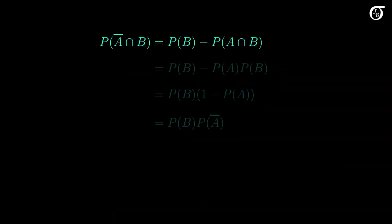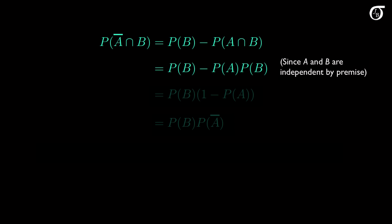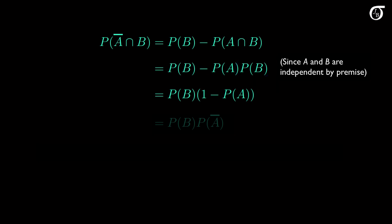We see now that our expression includes the probability of the intersection of A and B. This is useful because we can now invoke our premise that A and B are independent, by swapping the probability of the intersection for the product of the individual probabilities. These two terms both include the probability of B, so we can factor that out. We're left with the probability of B times 1 minus the probability of A, which is of course the probability of B times the probability of the complement of A. And that completes the proof.